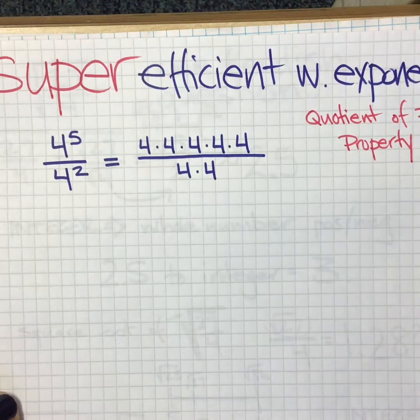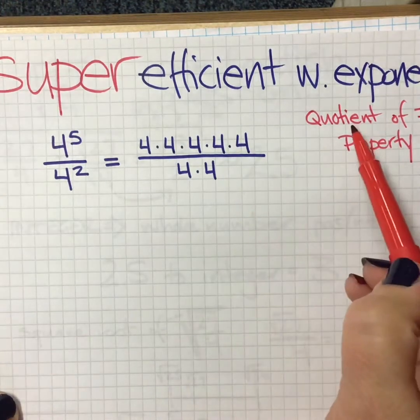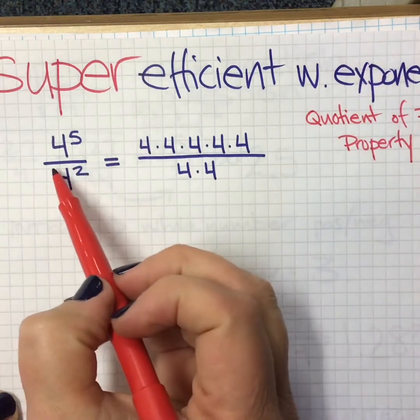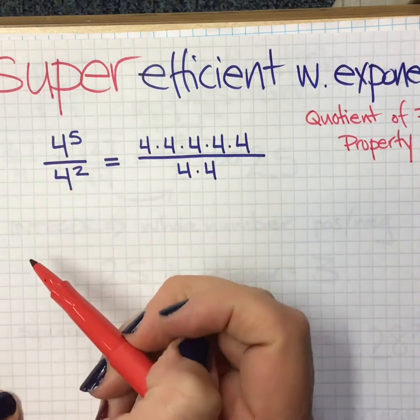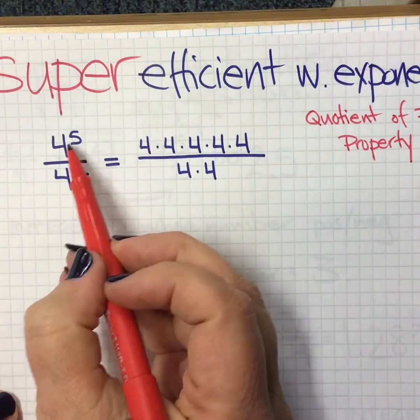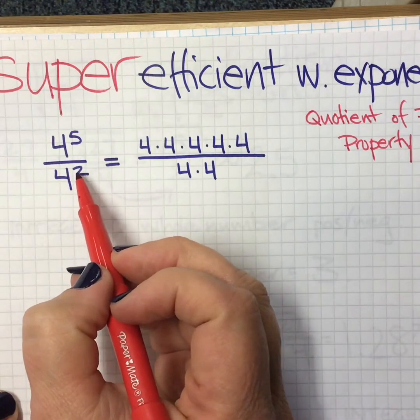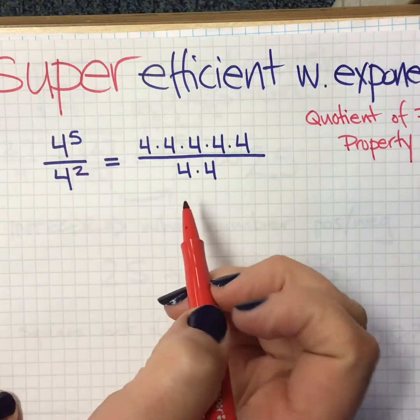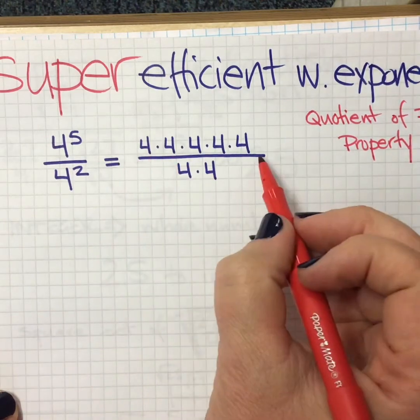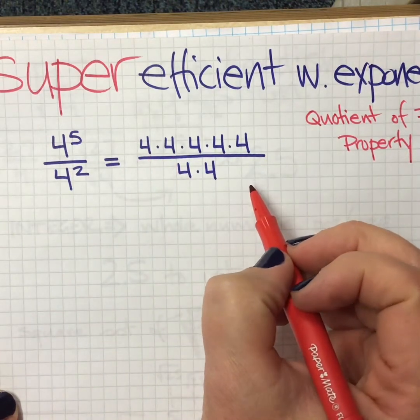Okay friends, final property to share here is the quotient of powers property. Now we're going to start doing division. Really quick, 4 to the 5th divided by 4 to the 2nd. I can multiply it out or I can do that very basic thing, give me my expanded form to make it really obvious.